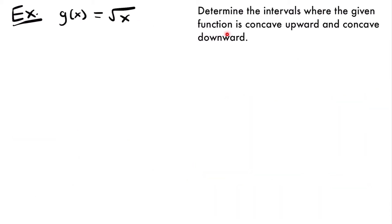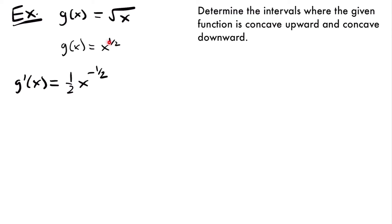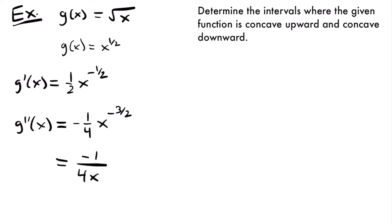Next, we want to determine the intervals where the given function is concave up or concave down for g of x equals the square root of x. We'll start by rewriting that as g of x equals x to the 1 half power, because that makes it easier to take the derivative using the power rule. So g prime of x is going to be equal to 1 half times x to the negative 1 half power. Then we can take the derivative again for g double prime of x, which equals negative 1 fourth times x to the negative 3 halves power, or negative 1 divided by 4 times x to the 3 halves.